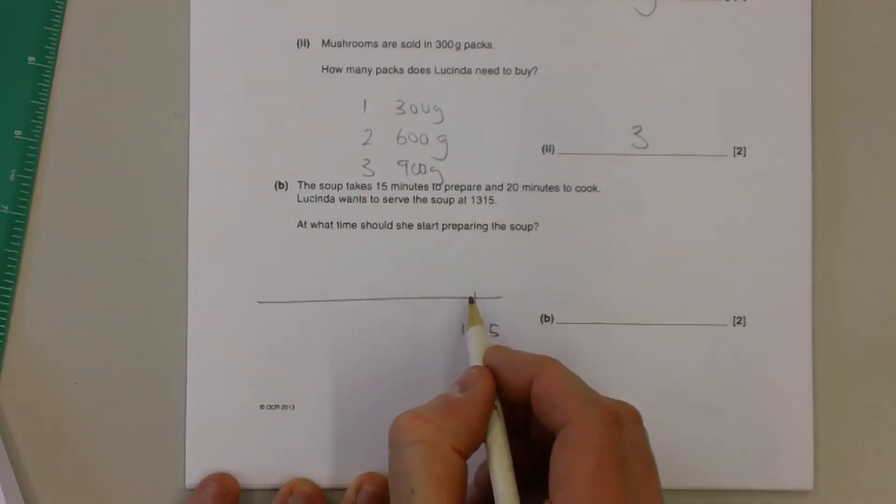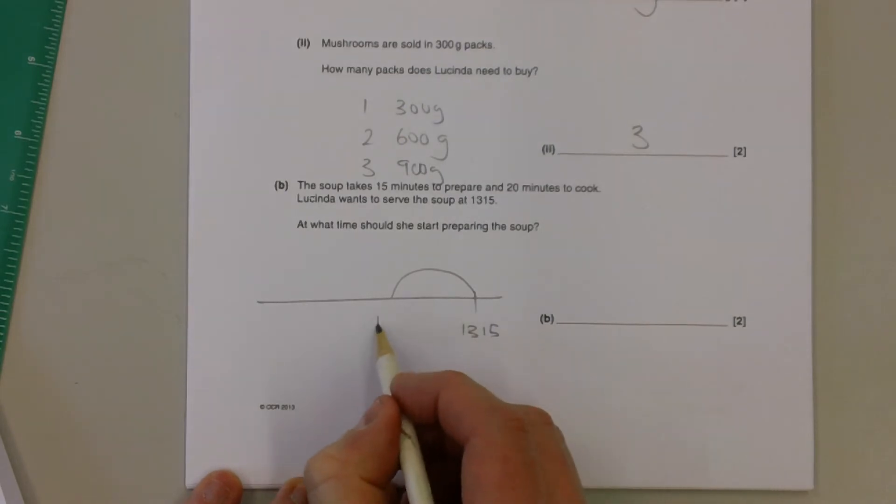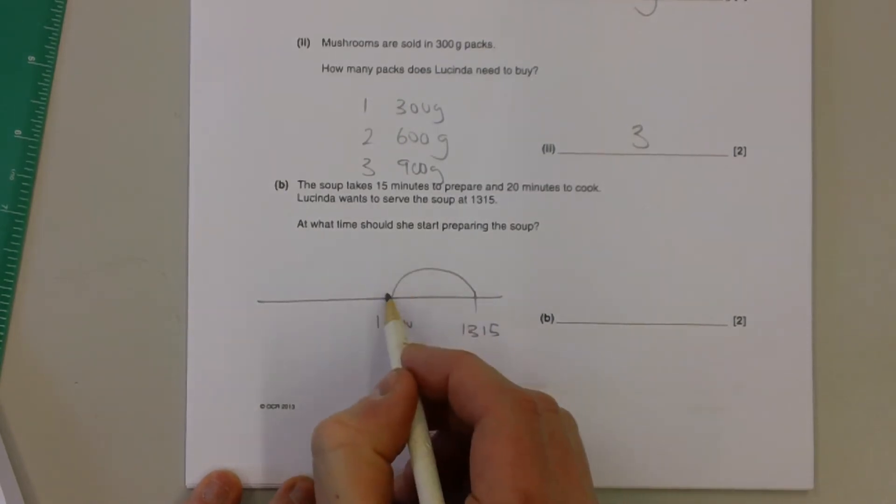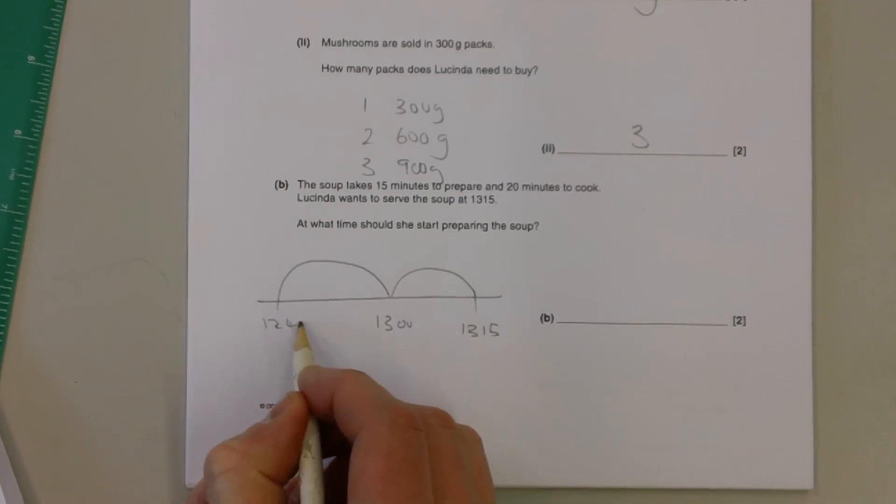It's probably easier to swap the order of these around because if you go back 15 minutes from quarter past one, that gets you to one o'clock, and if you go back 20 minutes from one o'clock, that gets you to 12:40.